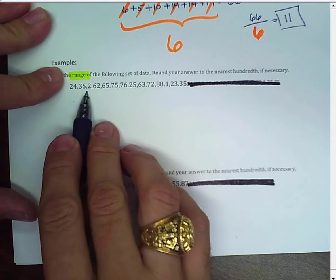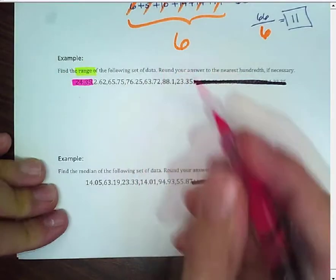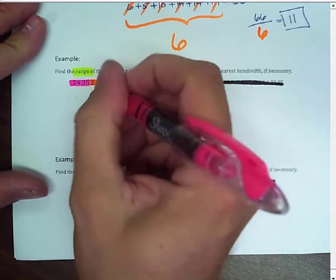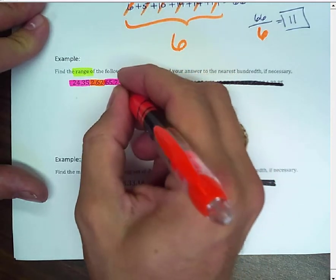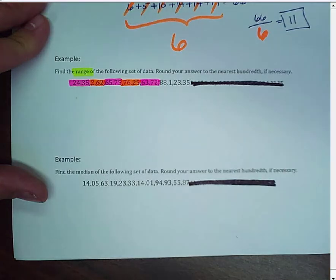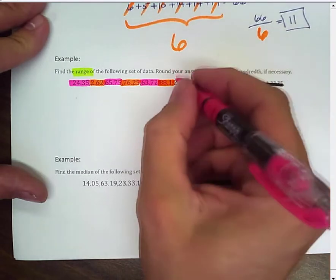I'm going to do my best to just break them apart. So, I'm going to use a couple of different colors and break these numbers up. So, my first number is 23.45. My second number is 2.62. Third is 65.75. Fourth is 76.25. Fifth is 73.72. And all this is doing is kind of helping me to distinguish the difference in the numbers.